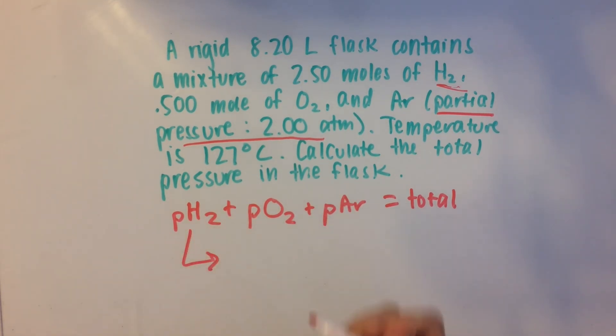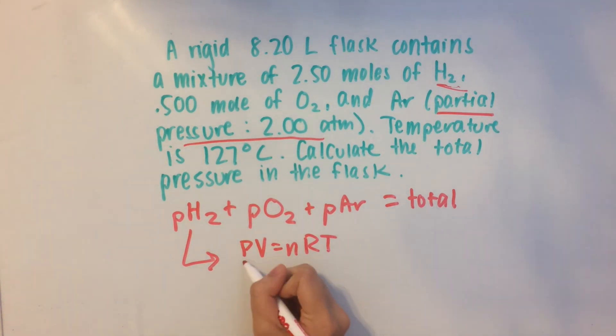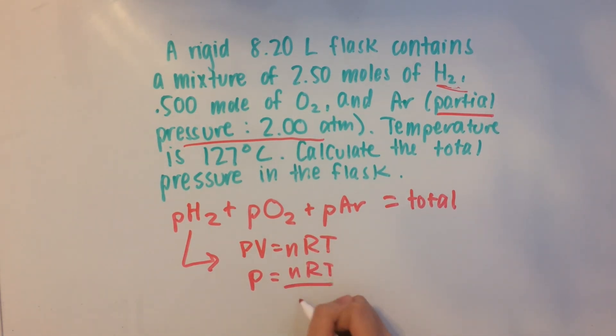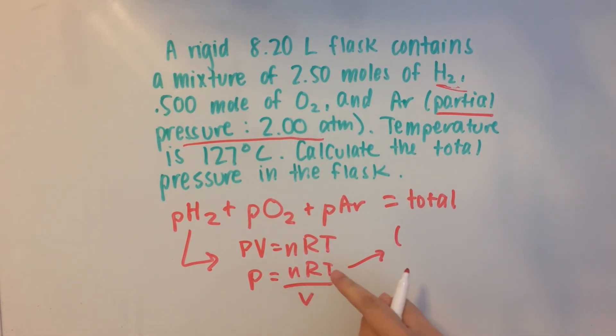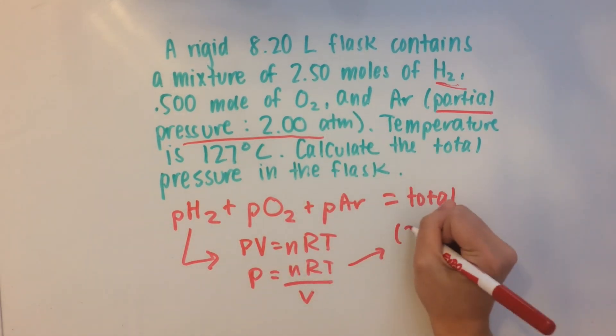Now for the pressure of H2, let's go back to our ideal gas equation, PV equals nRT. So to solve for pressure, we just divide both sides by volume and we get P equals nRT over V. Now we could just plug and chug and solve for the pressure of H2. So n stands for number of moles and it says we have 2.5.